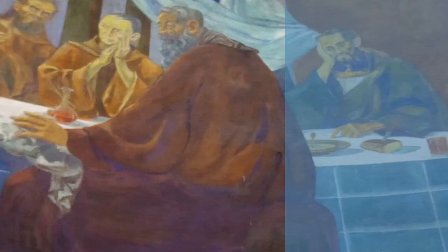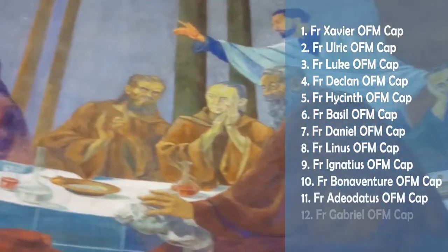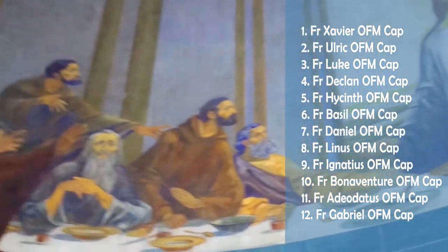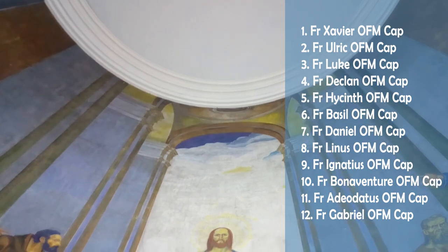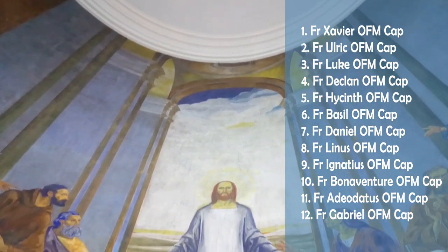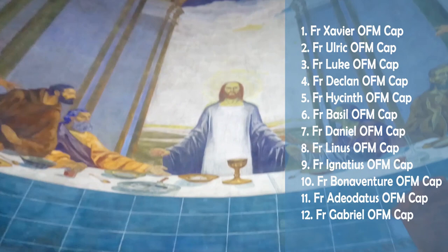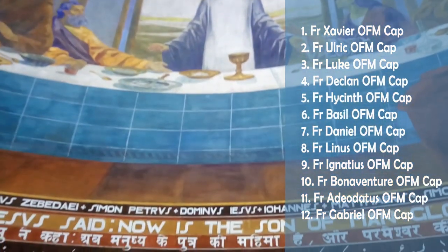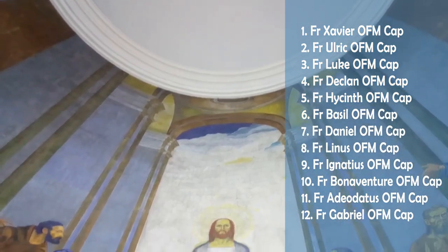The following Capetian Friars became models for the Apostles and Jesus: for the Saviour, F.M. Cap; for Ulrich, F.M. Cap; for Luke, F.M. Cap; for Delcan; for Hyacinth; for Basil; for Daniel; for Linus; for Ignatius; for Bonaventure; for Adiodatus; for Gabriel.